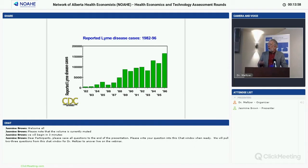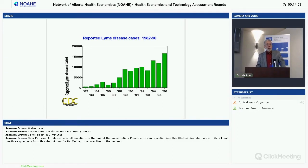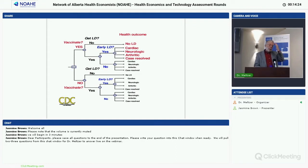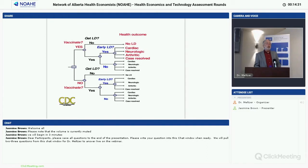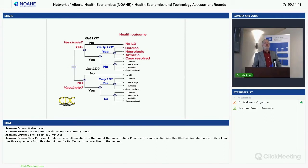Currently, reported Lyme disease cases are probably 20,000 to 30,000 per year, but research suggests under-reporting by a factor of five to ten — perhaps as many as 300,000 cases a year in the U.S. Fortunately, most cases are easy to treat. Back when we built this model, a new vaccine was coming up for licensure for Lyme disease in humans, and the question was what recommendation the ACIP should make regarding who should get vaccinated and under what conditions.